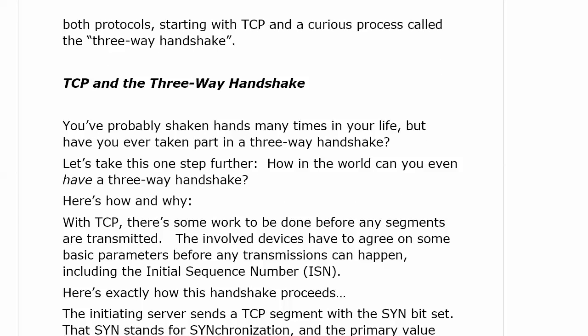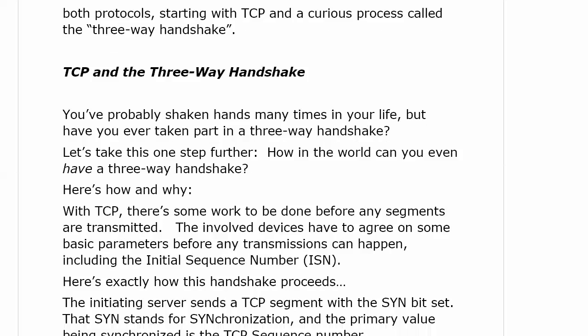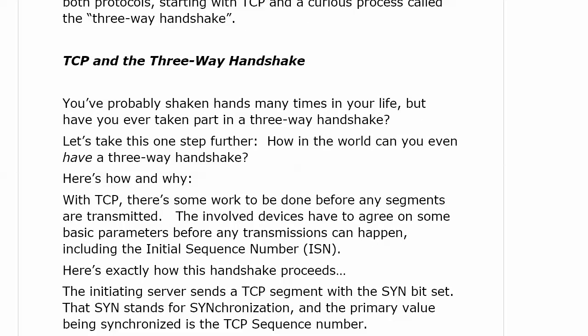You've probably shaken hands many times in your life, but have you ever really taken part in a three-way handshake? How can you even have a three-way handshake? Even if you do the fist knock, it's still just two. How do you get a third party in a handshake? Well, here's how and here's why we have that with TCP, because there's a control connection — an underlying connection between the two parties — that has to be built before any segments are transmitted.